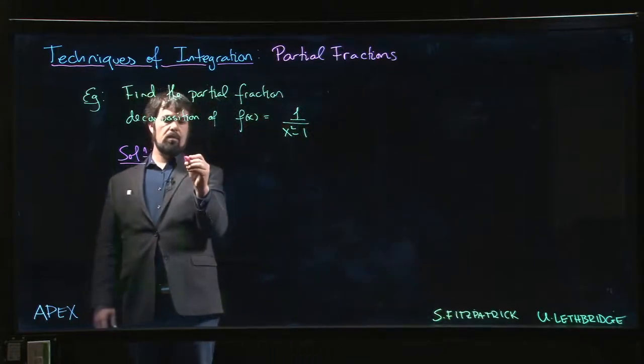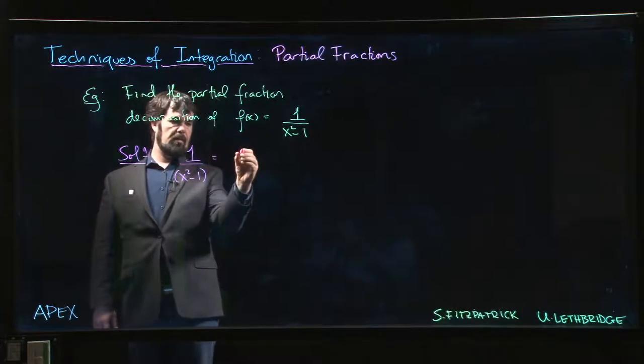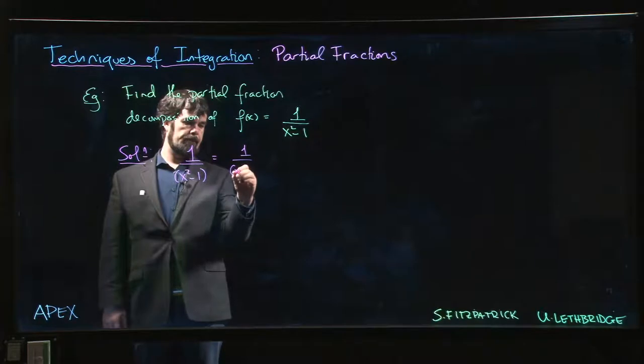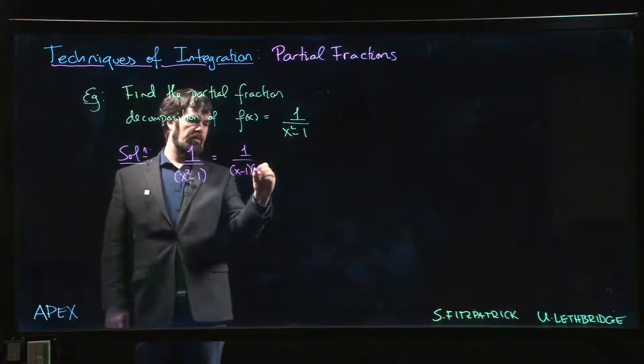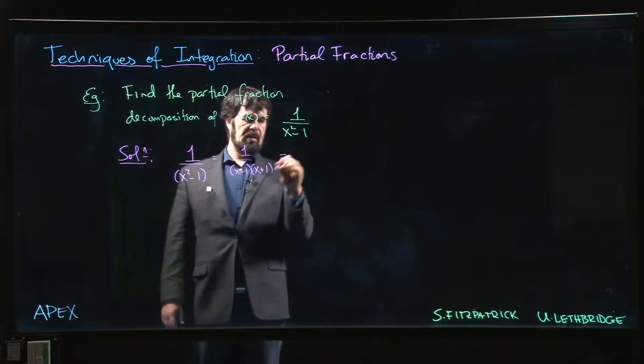So the first thing we do is we break down our function, and the first thing we've got to do is factor the bottom. So x squared minus 1 is the difference of squares: x minus 1 times x plus 1.